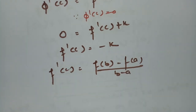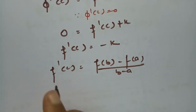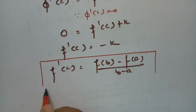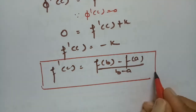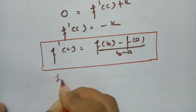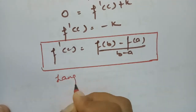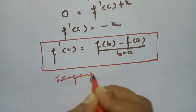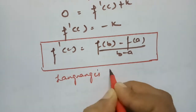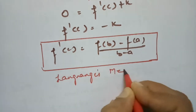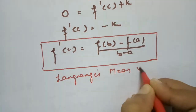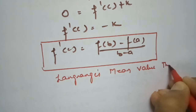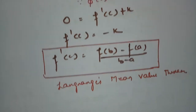So the result is established — f'(c) = [f(b) − f(a)] / (b − a) — which is nothing but Lagrange's mean value theorem.